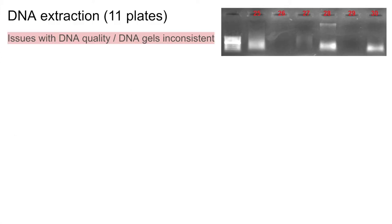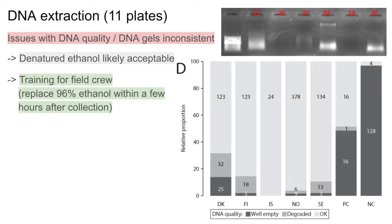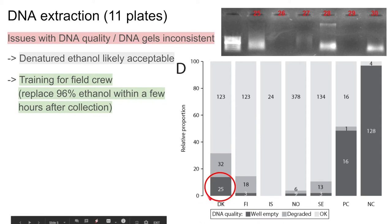The first issue we encountered was with DNA quality. A few samples did not show any DNA in the gel or did show degraded DNA. This is likely not caused by the denatured ethanol, as most samples worked just fine — we assume this problem is in sample handling. The instructions were to replace the ethanol with fresh ethanol a few hours after collecting the samples to ensure that the overall ethanol percentage is higher than 90%. We can see that, for example, for Denmark, there were a bit more samples affected with no DNA visible in the gels or degraded DNA.